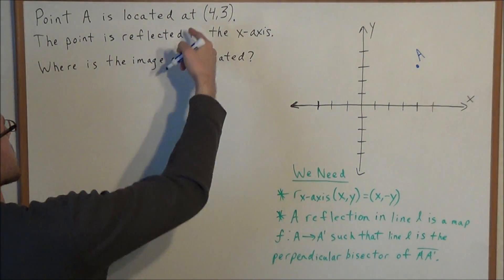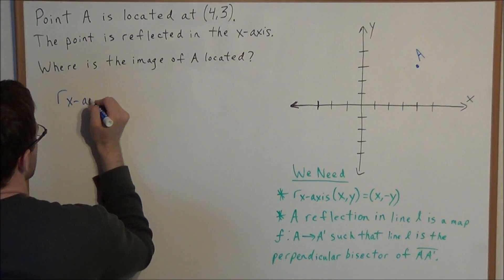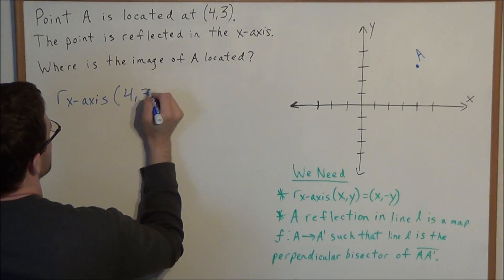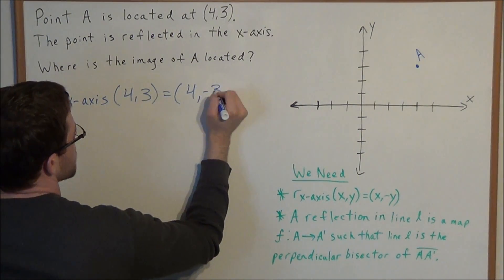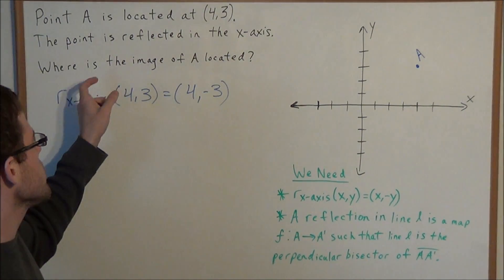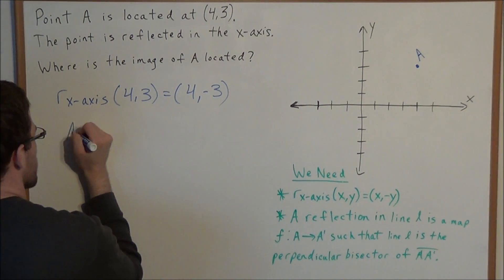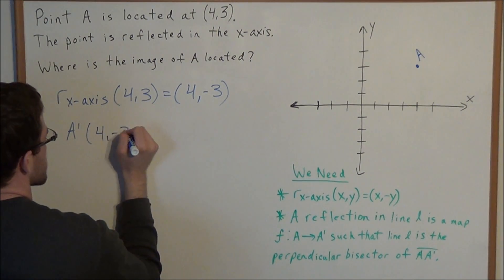So if we're looking at the point (4,3), a reflection in the x-axis of the point (4,3) is equal to 4, and we negate the y-coordinate, so (4,-3). Where is the image of A located? We'll call that point A prime, and A prime is located at (4,-3).